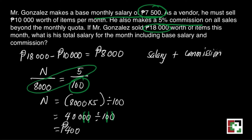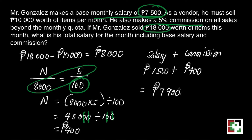Now we will just add the commission and the salary. That's 7,500 pesos plus 400, which equals 7,900 pesos. This is his salary for this month.